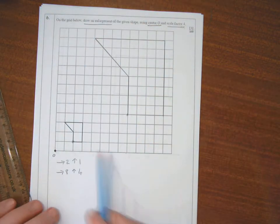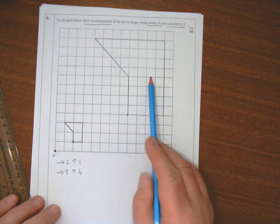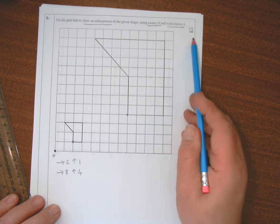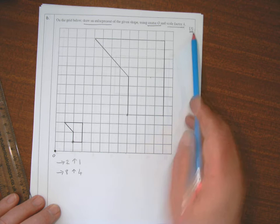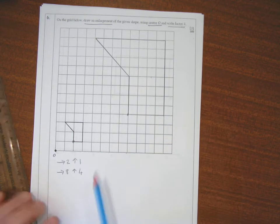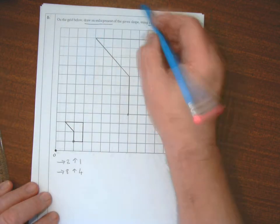So that shape, that size, in that position gives me the three marks. If you've drawn this anywhere else on the grid to the same size, you can only have two out of the three.